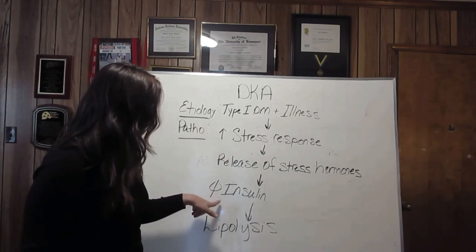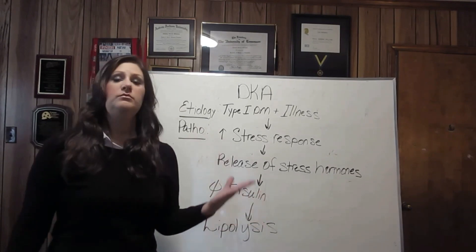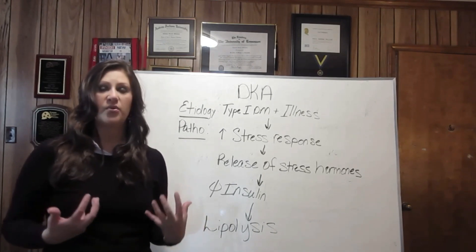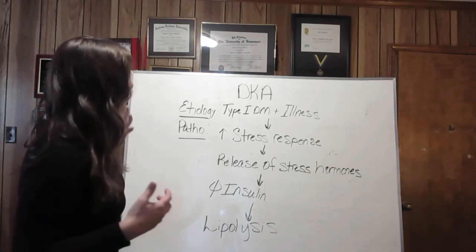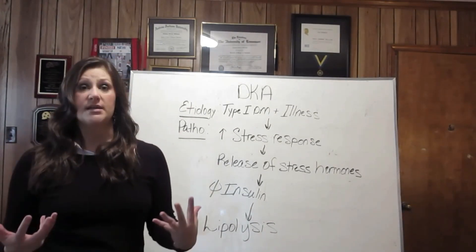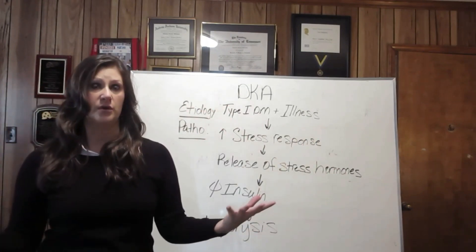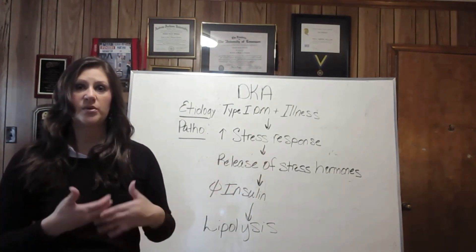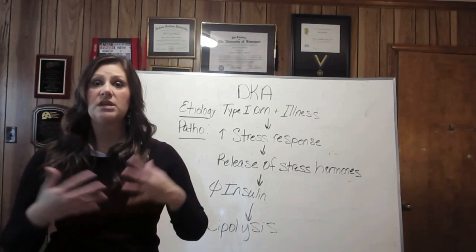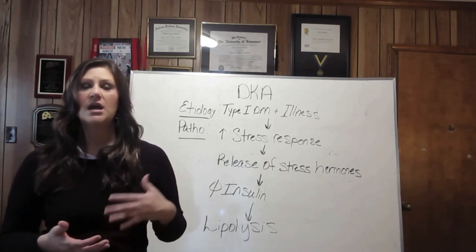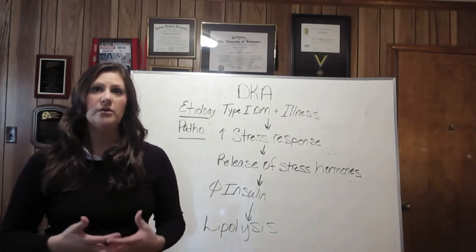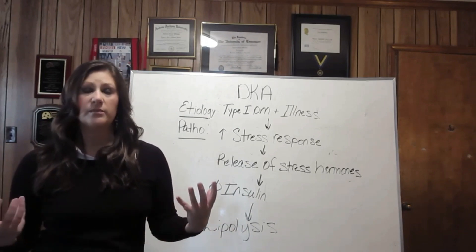Now, coming on down to the part where it says no insulin — our type 1 diabetics. We know that type 1 diabetes is an autoimmune disorder where the beta cells just do not produce adequate insulin. So when you throw someone who is not producing adequate insulin into a state of stress, and all these stress hormones get released that increase blood sugar, the fact that they have no insulin to protect them from that is going to lead to tremendous increases in blood sugar.